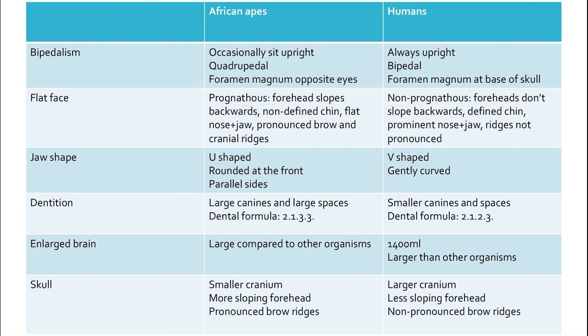Now the differences between African apes and humans. For bipedalism: African apes can occasionally sit upright but are quadrupedal, and their foramen magnum is opposite the eyes. However, in humans they are always upright — they are bipedal — and their foramen magnum is at the base of the skull.